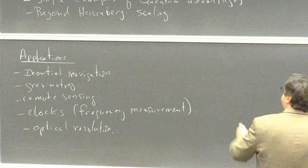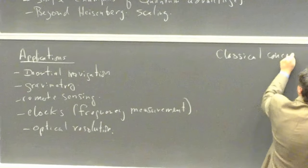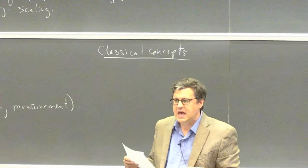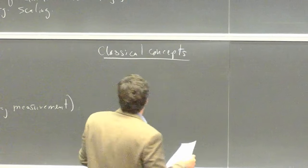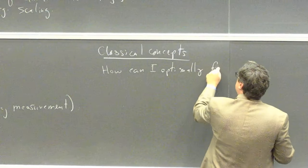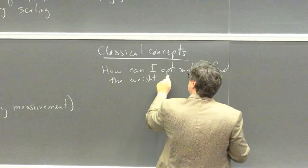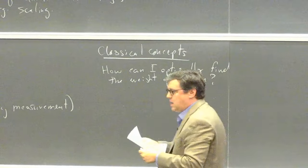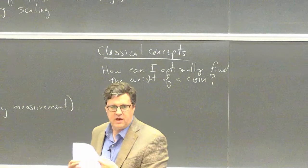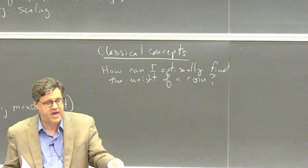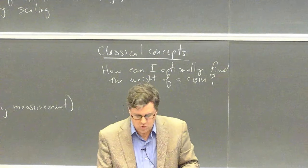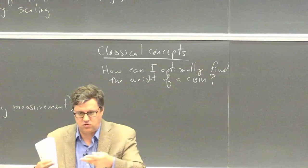Let's start with classical concepts in metrology. Suppose I toss a coin — not a fair coin, but one weighted in some way. How can I optimally find the weight of that coin? This basic problem involves a physical process (throwing the coin N times), a resource (the number of throws), the data I get (number of heads versus tails), and some kind of processing of that data. I take that information and construct an estimate of the weighting of the coin. All those elements are common to every metrological process.